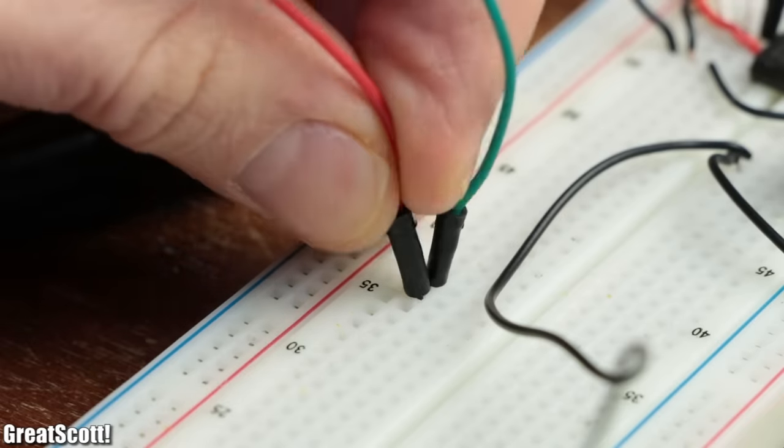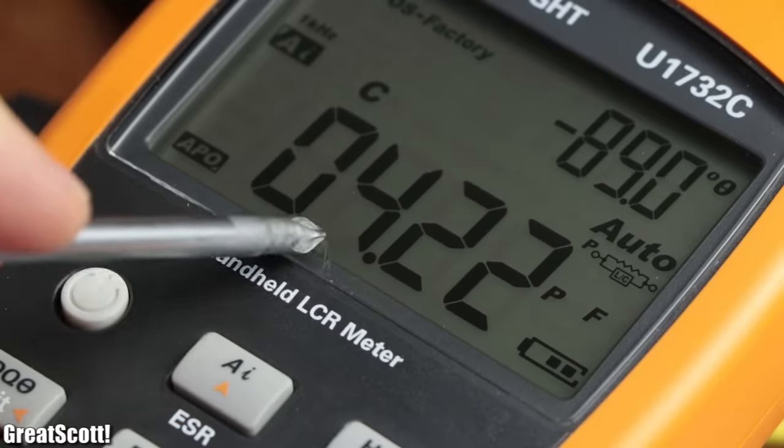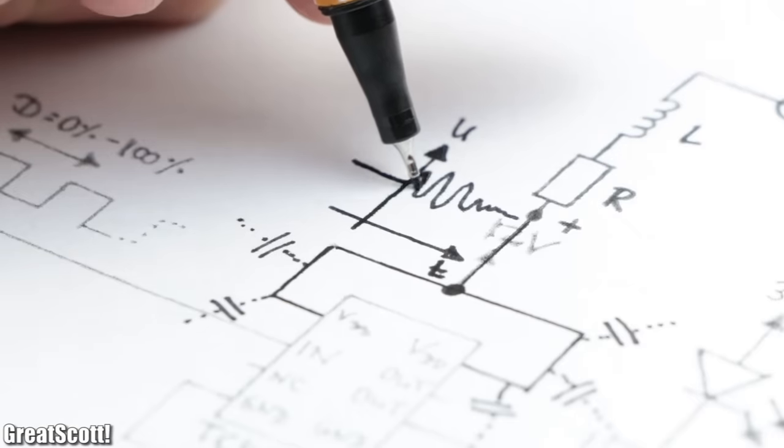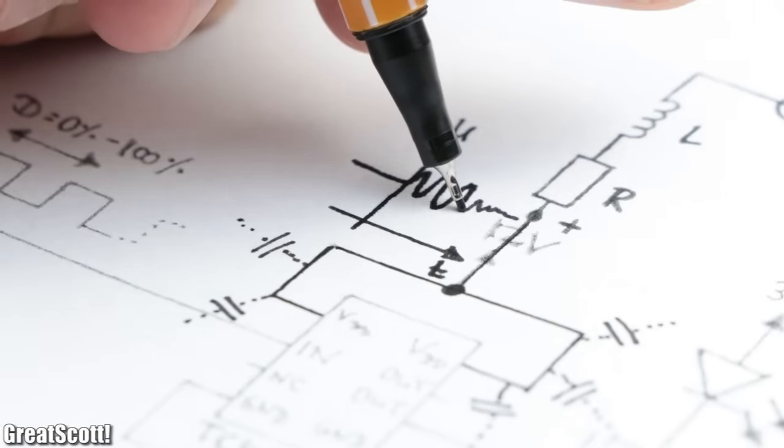Combine that with a breadboard construction, which comes with noticeable parasitic capacitances, and we got ourselves a small oscillator on the supply voltage pin that leads to problems.